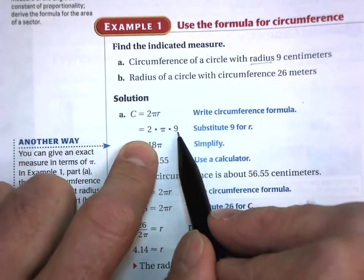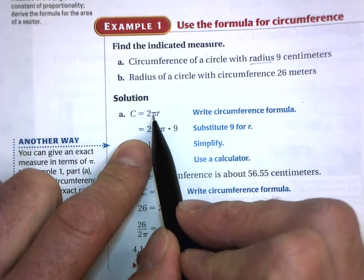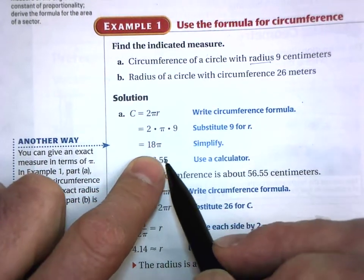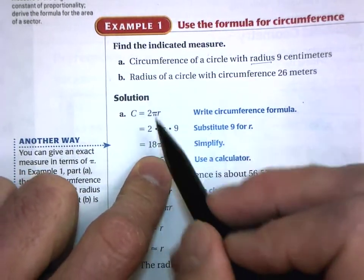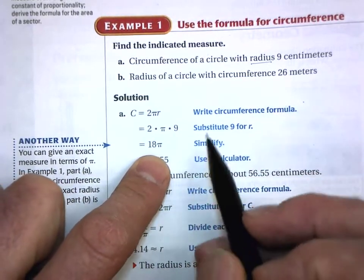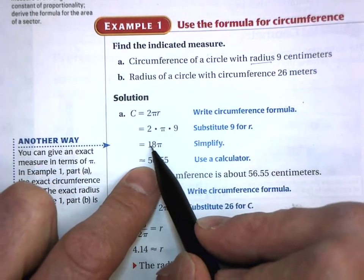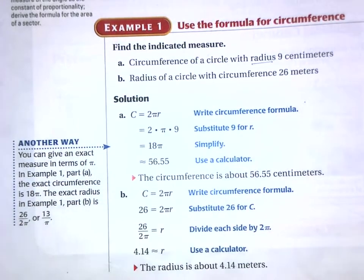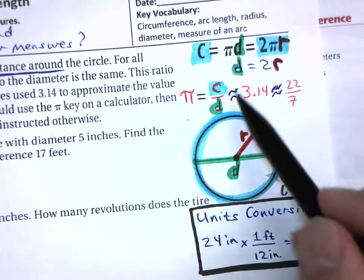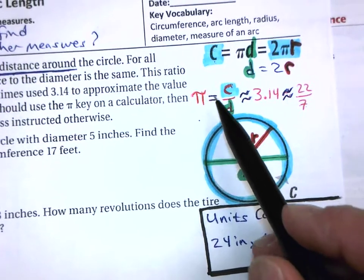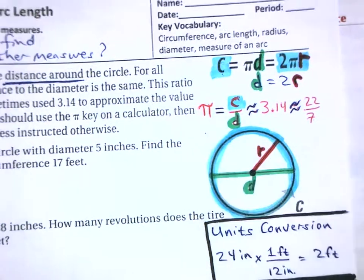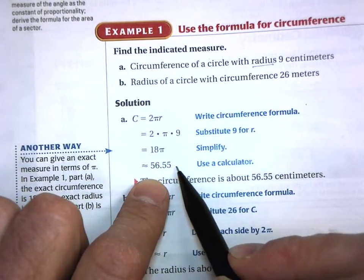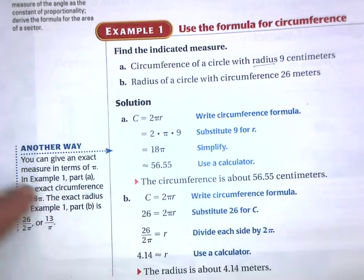We simply multiply: 2 times 9 equals 18, so the circumference is exactly 18π. If you want a decimal, multiply 18 times the pi button on your calculator — do not use 3.14 or 22/7, as those are approximations. Using the exact pi button gives you approximately 56.55 when rounded to the nearest hundredth.